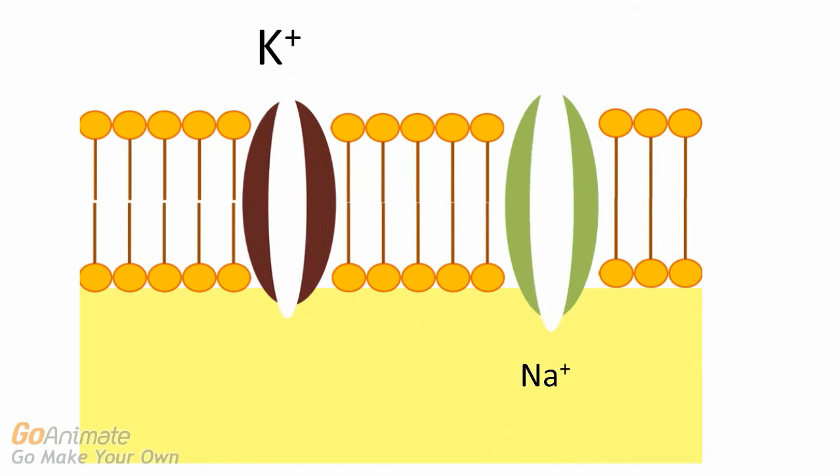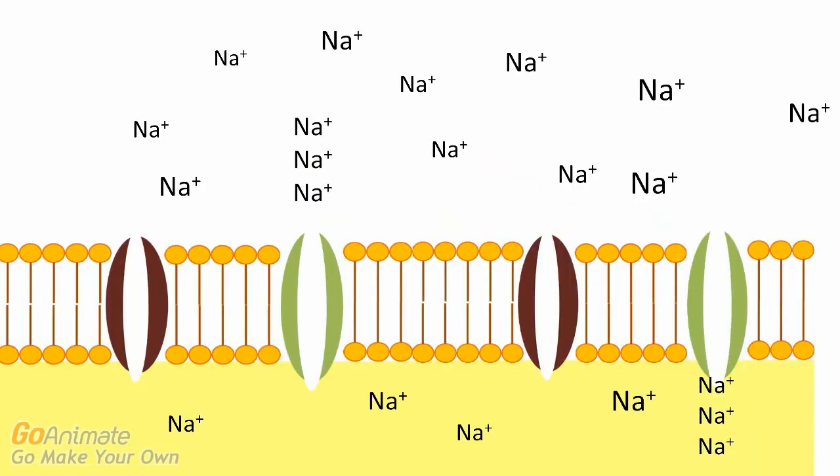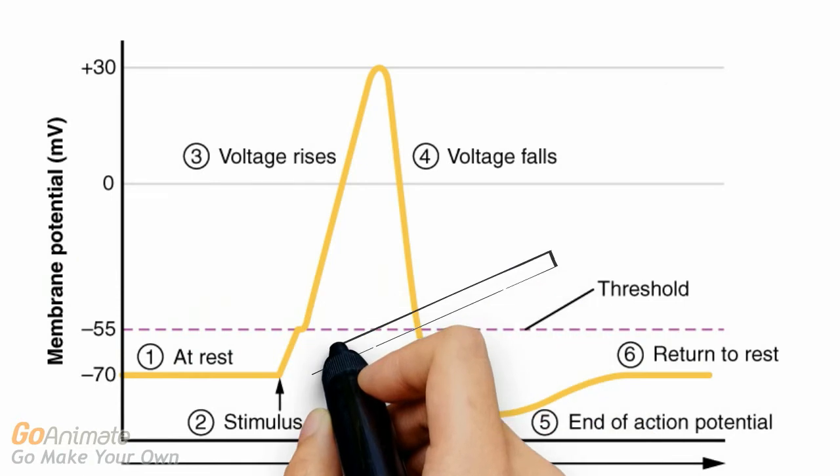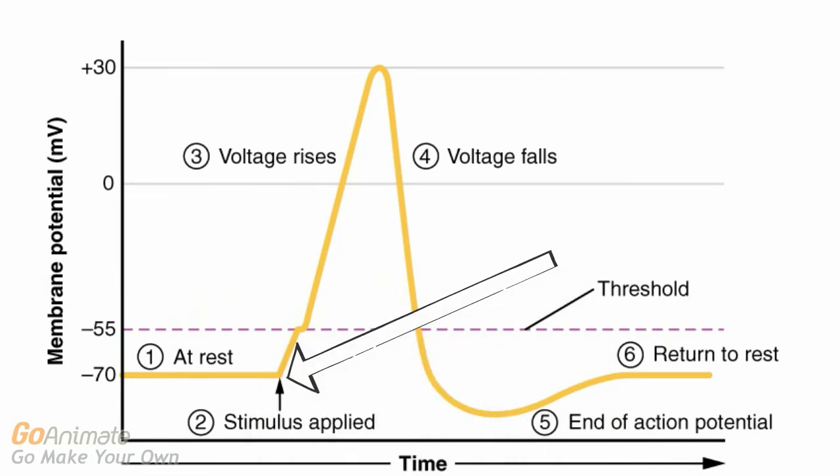The protein channels allow for the movement of sodium and potassium in and out of the cell. There is a higher concentration of sodium outside of the cell than in. When the neuron is stimulated by a neurotransmitter, voltage-gated sodium channels open, allowing sodium to move into the cell. We say the neuron is depolarizing. The membrane is becoming less negative as positively charged sodium moves into the neuron.